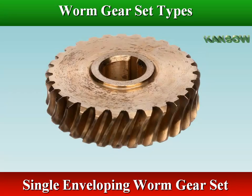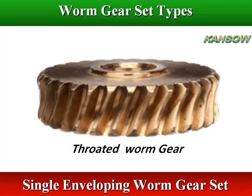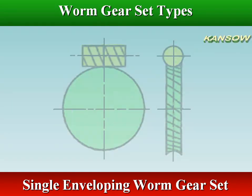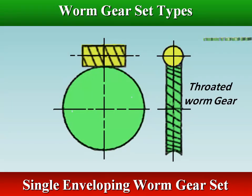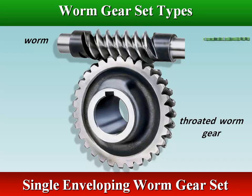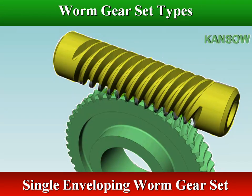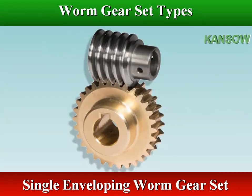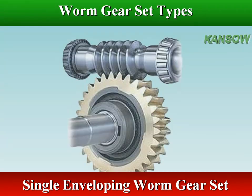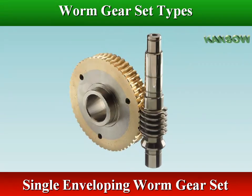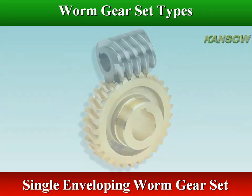A single-enveloping worm gear set is the type in which the worm gear is throated, so that it wraps part way around the worm. The contact area between the worm and the worm gear is significantly increased by this arrangement, allowing a larger load to be carried across a single gear mesh.